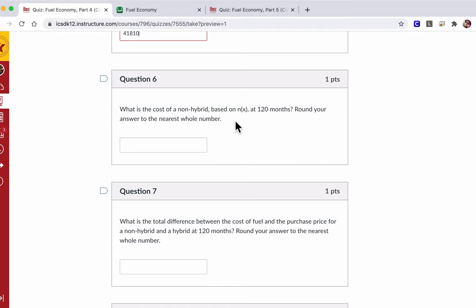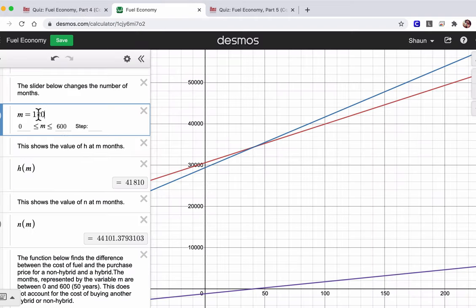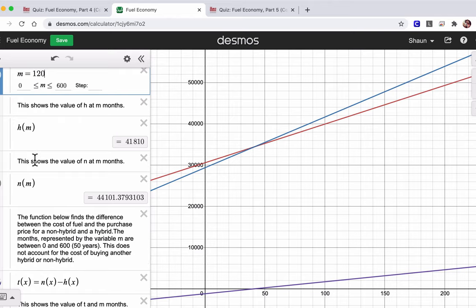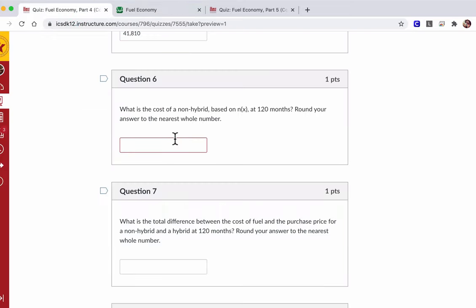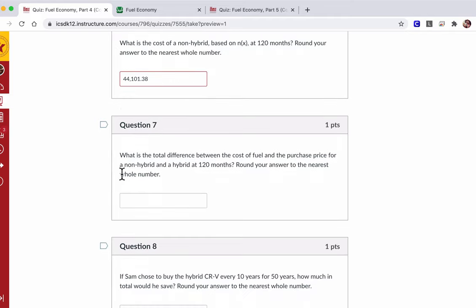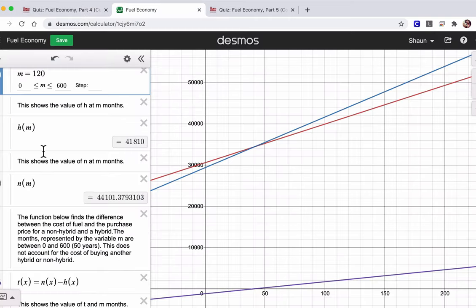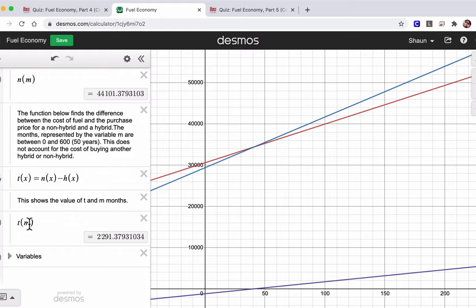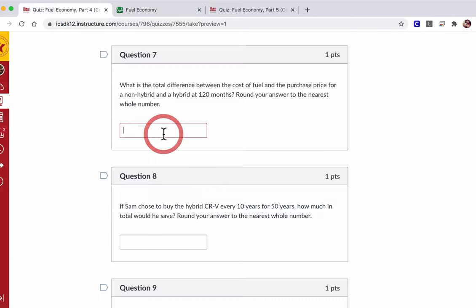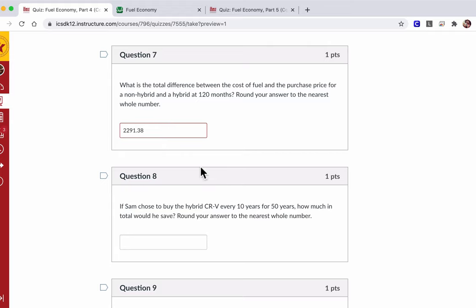What is the cost of a non-hybrid n of x at 120 months? So it's the same thing because it's already at 120. So the same m value. But you can see the cost here is a little different. It's 44,101.38. So 44,101.38. What is the total difference between the cost of those two? Now you could go back and just subtract them. But we already have a function for that. So at 120 months, here T of m, the total difference in cost, is listed out as 2291.38 to the nearest penny.